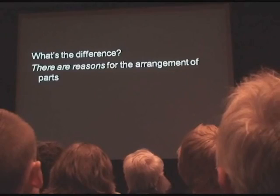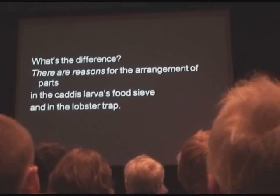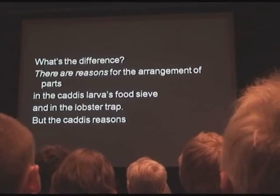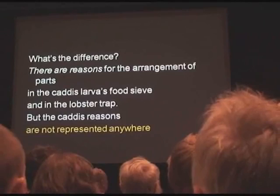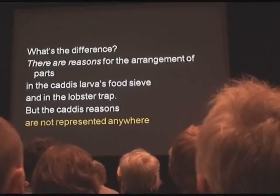What's the difference? Well, I want to say there are reasons for the arrangement of the parts in both cases — in the caddis larva's food sieve, there are reasons, and in the lobster trap. The difference is that in the caddis case, the reasons are not represented anywhere. They're not represented in the caddis larva's little nervous system, and they're not represented in the process of natural selection that designed the caddis larva's nervous system — but they are the reasons nonetheless.